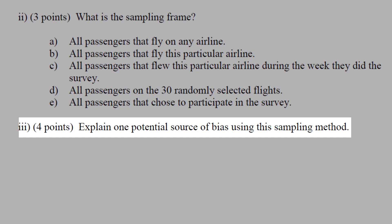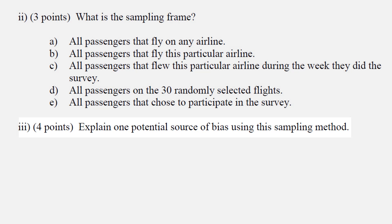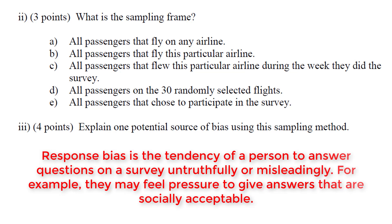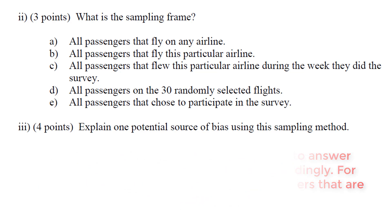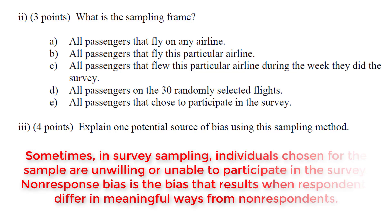Explain one potential source of bias using this sampling method — and there are a lot of answers. We could talk about how people could give us response bias. Imagine if the stewardess is standing over you as you fill out this comment card; that would definitely sway what you're going to say, so your response would not reflect what you actually think. Also, there could be non-response bias — people who are angry might not fill out their comment card and might leave before turning it in, so we're not getting the true picture because people are not responding due to some sort of bias.